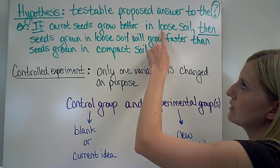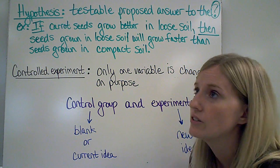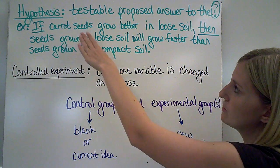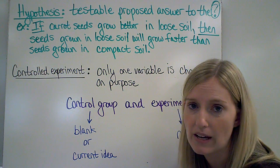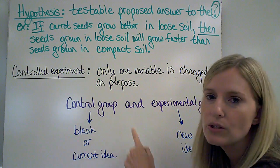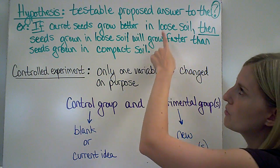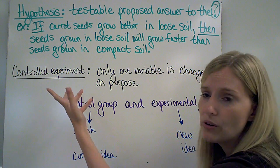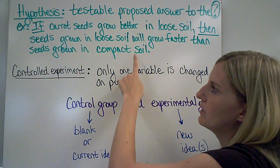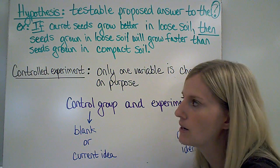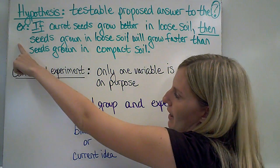So I might start with: 'If carrot seeds grow better in loose soil,' — meaning I think loose soil would be better for the seed. You could also say 'If carrot seeds grow better in compact soil...' if you think compact soil will be better. The 'then' part tells you how you will know if you are correct or not. So if those carrot seeds are going to grow better in loose soil, I will know this because the seeds grown in loose soil will grow faster than the seeds grown in compact soil. That's my hypothesis for this experiment.